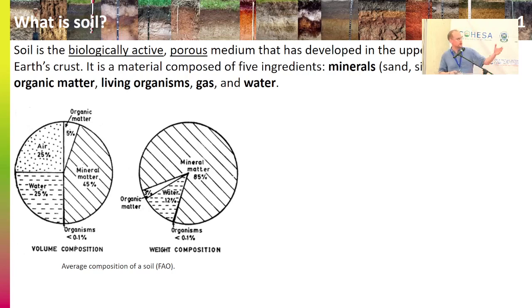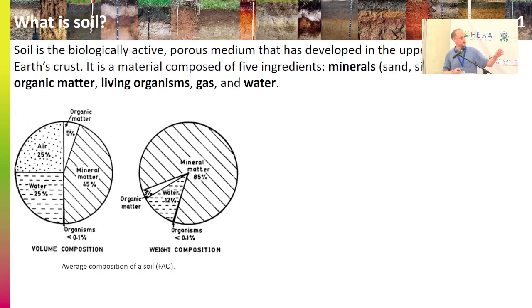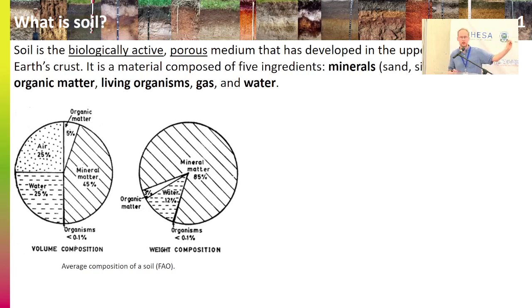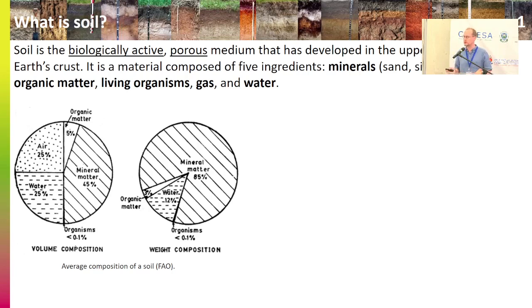Here is the average composition of a soil at the global scale from FAO. We can see the weight composition. Most of the mass of a soil is made of minerals. Then you have some water, and the organic matter is a very small percentage — here 3%. But actually in many soils in sub-Saharan Africa it is much lower, less than 1%. 3% is already quite a good soil.